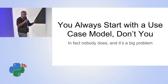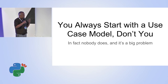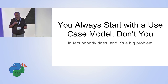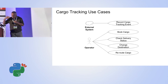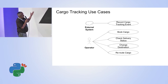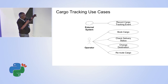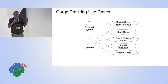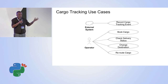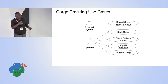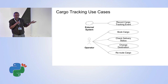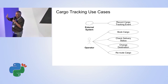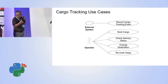Good education would start with a use case model. Let's look at the use case model of the cargo tracking system. We have one use case for recording external events: third parties reporting what happens with cargo — loaded, unloaded, claimed, passing customs. And internal use cases like booking cargo, checking its status, changing direction, and maybe rerouting if it's misdirected.